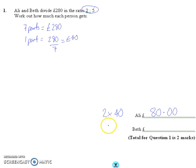And Beth gets 5 parts, each worth £40. So it's 5 times 40, which is obviously just £200. And that's it. That's your lot.